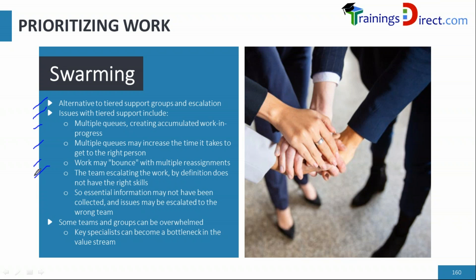Another challenge is that level-one teams often don't know whom to escalate to, because they typically lack in-depth technical skills. They are stronger on the customer side — emotional intelligence, communication skills — but not on technical expertise. So escalation may be incorrect, unless someone specifically directs them to the right team, in which case it works better.